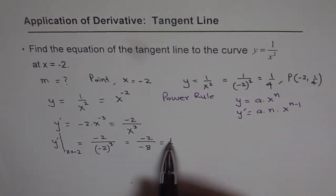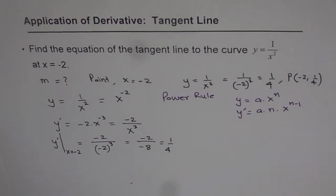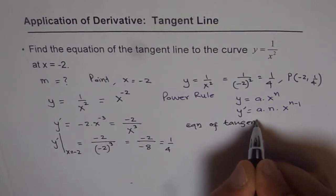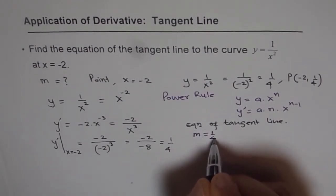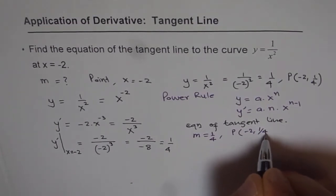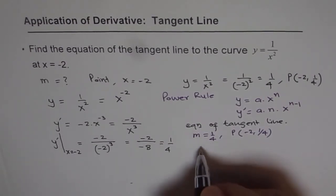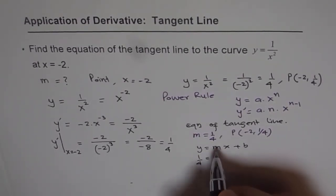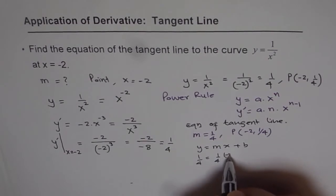So the slope of the tangent line is 1/4 at x equals minus 2, which corresponds to the point (minus 2, 1/4). Now we can find the equation of the tangent line. We have slope m equals 1/4 and point P equals (minus 2, 1/4). Starting with y equals mx plus b: substituting, we get 1/4 equals (1/4)(minus 2) plus b.